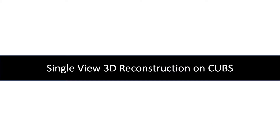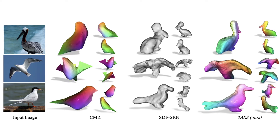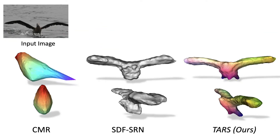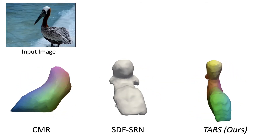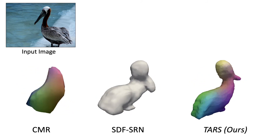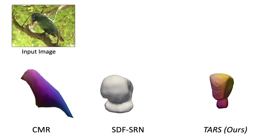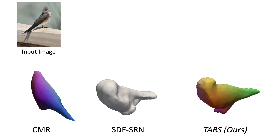I'll now showcase some visualizations of the reconstructed shapes, beginning with the CUBS dataset. As you see from rows 1 and 2, unlike prior works, we can model varying object geometries and articulations considerably well. While not guaranteed to learn articulations, we notice that the proposed approach even models correspondences for highly articulated objects considerably well. Compared to prior works, we can better model larger birds and handle articulations like bent or rotated heads.